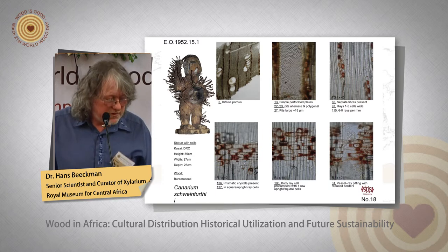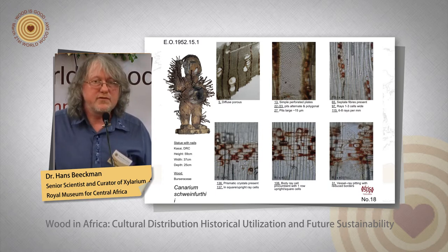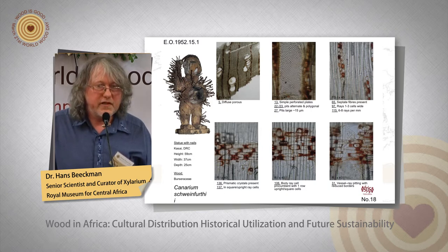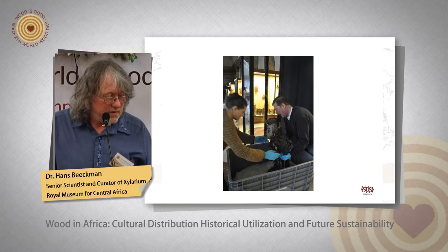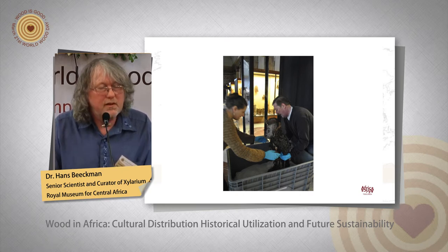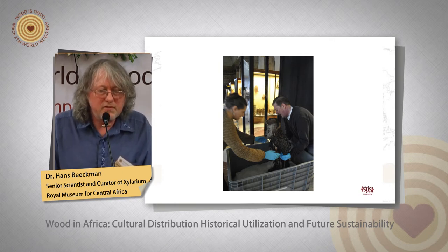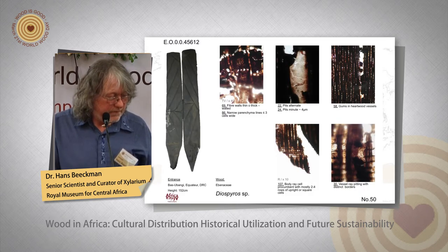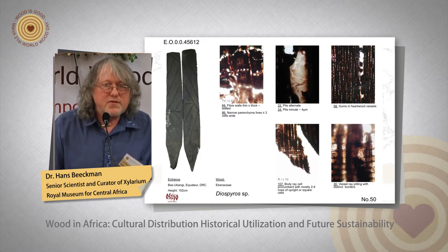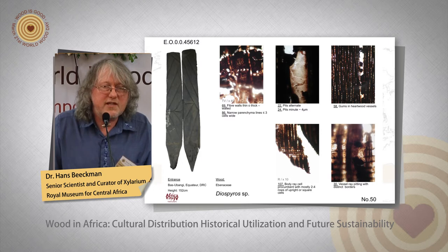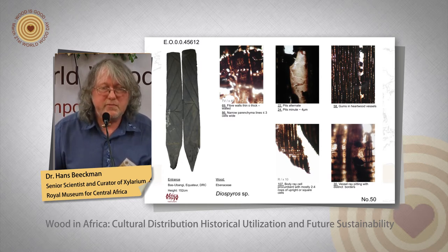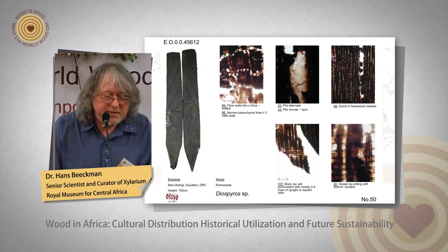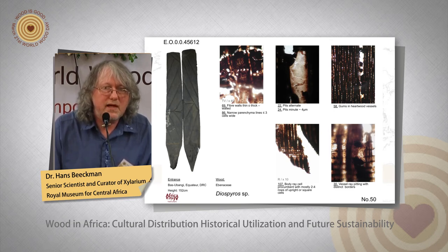Another emblematic sculpture from the collection is carved from Canarium — the fetish statues. One of the most beautiful ones will travel in the coming weeks or months to America for a temporary exhibition. There are also doors in very heavy, very hard wood, extremely difficult to carve but very durable — you can carry these doors from one abandoned village to another many times. It is often Diospyros, the real ebony, which is exceptional in traditional African culture.